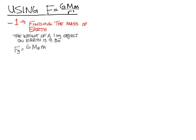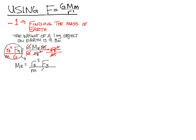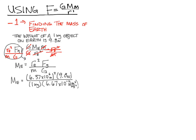Taking our gravitational formula F = GMM/R², we rearrange it: multiply both sides by the radius of the Earth squared, divide by the mass of the object, and divide by G. Everything on the right side crosses out, and we get: mass of the Earth = R²·F / (m·G). We know the radius of the Earth is 6.37 × 10⁶ meters, the weight is 9.8 newtons, the mass of the object is 1 kilogram, and G is 6.67 × 10⁻¹¹ N·m²/kg².